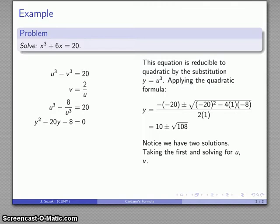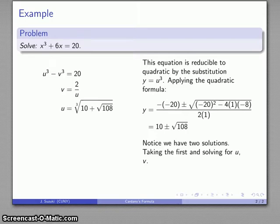Now, let's take a look at it. So let's take the first solution, the positive solution, y equals 10 plus square root 108, and solve for u and v. So remember, y is u cubed. That means u is the cube root of y. So if I'm taking that first positive solution, 10 plus root 108, there's my value for u.